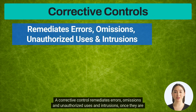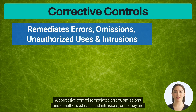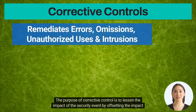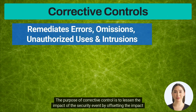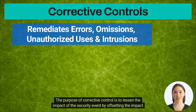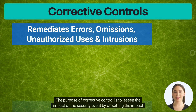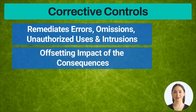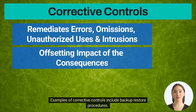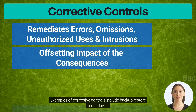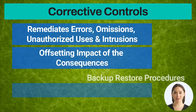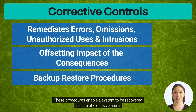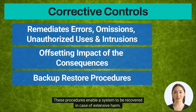A corrective control remediates errors, omissions, and unauthorized uses and intrusions once they are detected. The purpose of a corrective control is to lessen the impact of the security event by offsetting the impact of the consequences. Examples of corrective controls include backup and restore procedures, which enable a system to be recovered in case of extensive harm.